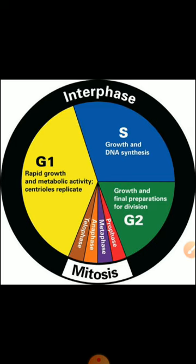By meiosis cell division, haploid gametes are formed. Sex cells are called gametes — those are eggs and sperm. Haploid means having half the number of chromosomes. Normal body cells have 46 chromosomes, but sperm and eggs have only 23 chromosomes each. During fertilization at the formation of the zygote, the 23 chromosomes from the egg and 23 from the sperm unite to form 46 chromosomes in the zygote. This is how chromosomal number is maintained by meiosis.